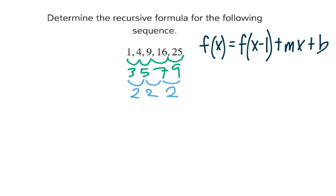This is saying that to get any point that we're looking for in this sequence, we take the previous point, and then we take m, which is our second difference here. So in our case, it's going to be 2.